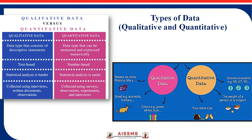In machine learning, there are two types of data. One is qualitative data and another is quantitative data. Qualitative data means a descriptive statement, and quantitative data means the data type that can be measured and expressed numerically.